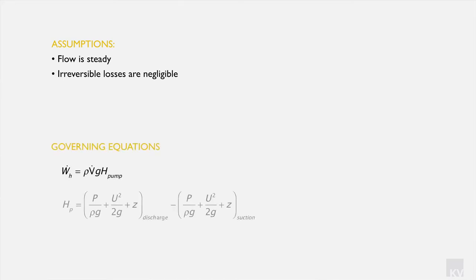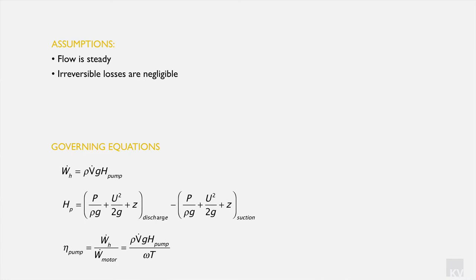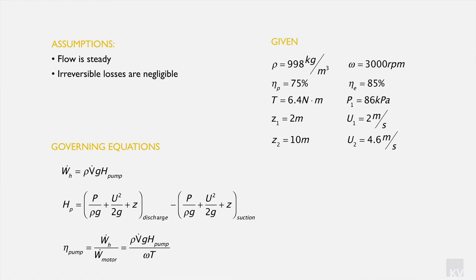The governing equations we're going to use — just three of them. The first is the work required to generate the head: density times volumetric flow rate times gravity times pump head. The pump head is the discharge side minus the suction side, comprising the pressure element, the kinetic element, and the potential element at each side. Finally, pump efficiency equals work required to generate the head divided by the work the motor must do.